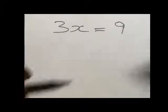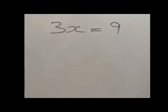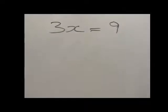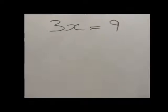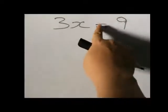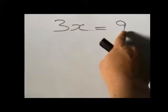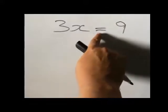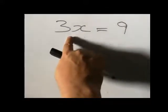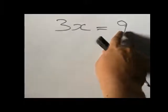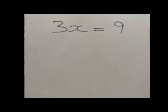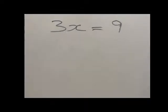But let's find x in a mathematical way. What you need to do is to divide both sides with 3. When I say both sides, I am referring to both sides of the equality sign — this side is the right-hand side, this side is the left-hand side. So when I say divide both sides, I am referring to 3x and 9. Both 3x and 9 will be divided by 3. Now the question is: why am I dividing both sides with 3?